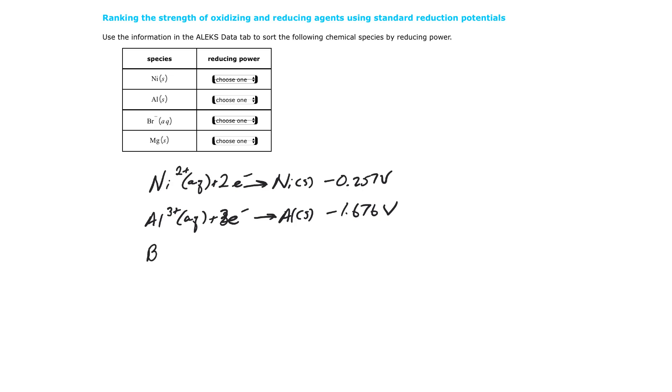Then I looked up bromine, Br2 liquid, plus 2 electrons, yields 2 Br negative aqueous, and it was 1.066 volts, positive. And then the last one, magnesium 2 plus aqueous,